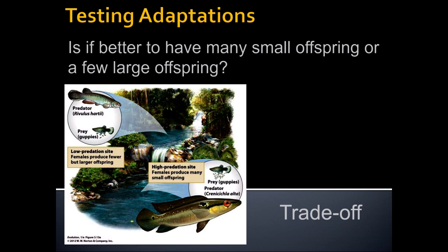A trade-off is when we have to give up one thing for something else. In evolution, if we give up something that is an advantage but gain something that's even more of an advantage, then overall that will be a benefit — an adaptation — and it will be selected for. Ideally you'd have as many babies as possible that are all large, but these mothers can't do that without putting their own lives at risk. So the trade-off is the size of the babies versus the number of babies.